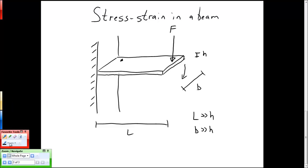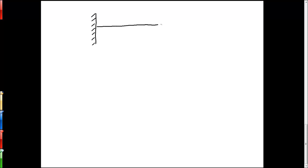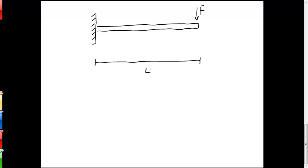We start with a two-dimensional stylized version of this beam and we'll apply some force F at some distance L from the wall. We want to know what are the forces and moments that must be created in order to react against this force being applied at the end of the beam.